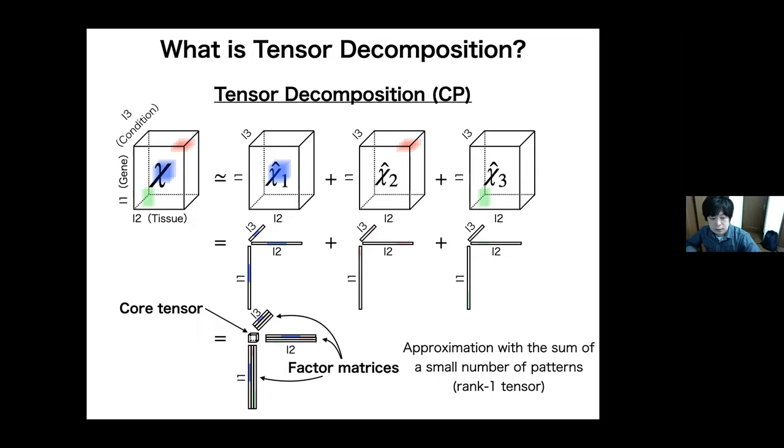Since the tensor decomposition is an extension of the matrix decomposition, let's consider it in the same way. If we have a third-order tensor, I mean gene times tissue times condition, using tensor decomposition, we can extract a small number of patterns. Each vector can be summarized to the multiple matrices, and these are called factor matrices. The scalar values are summarized to a small tensor, and this is called core tensor.